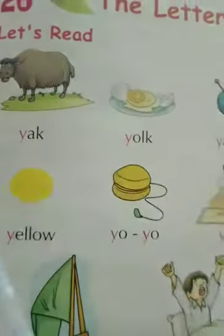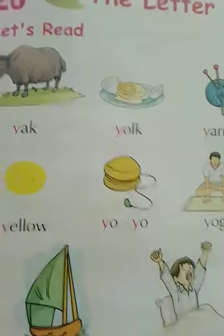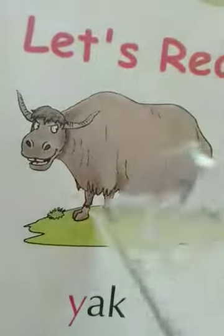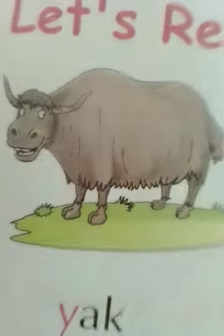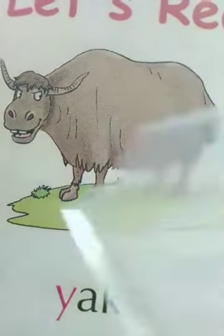Like yak, yolk, yarn. Y is for yak. Yak kya hoota hai? Yhe long-haired animal hoota hai. Iske jisum peh bahut sari baal hoote hain, aur in balu ka color brownish black hoota hai.